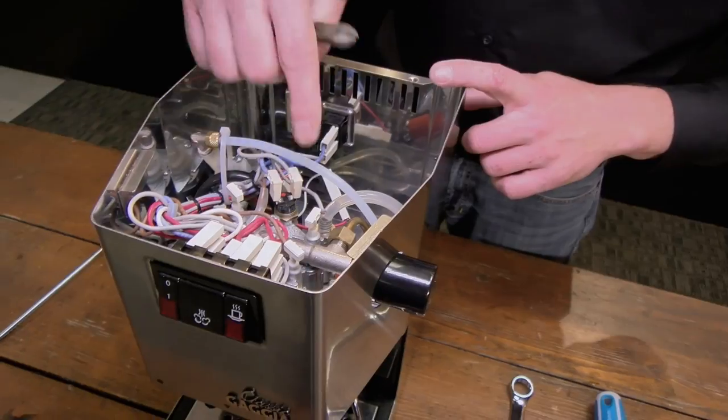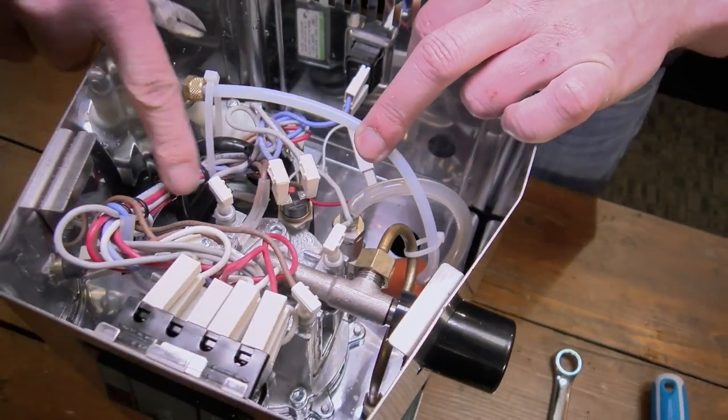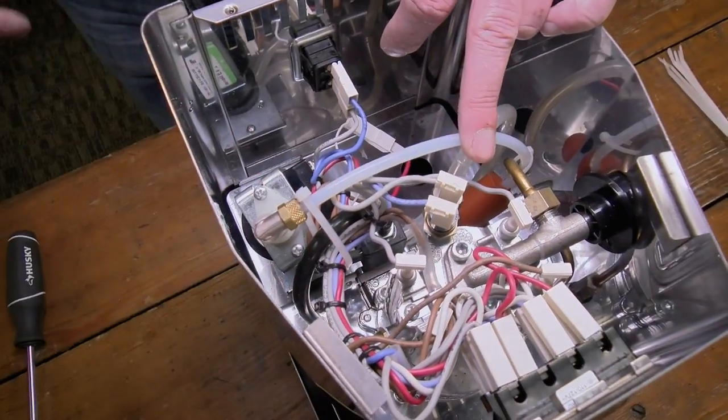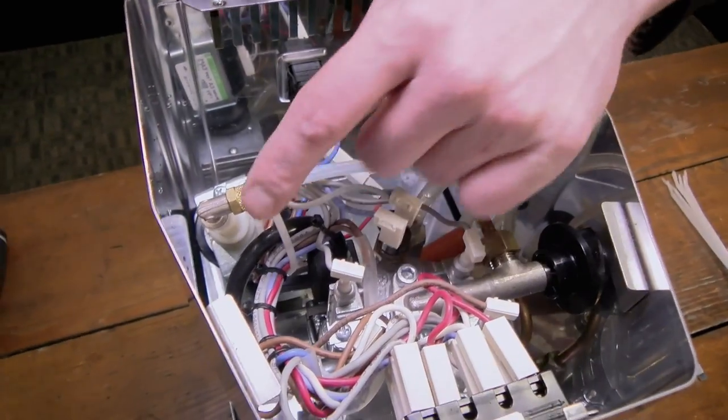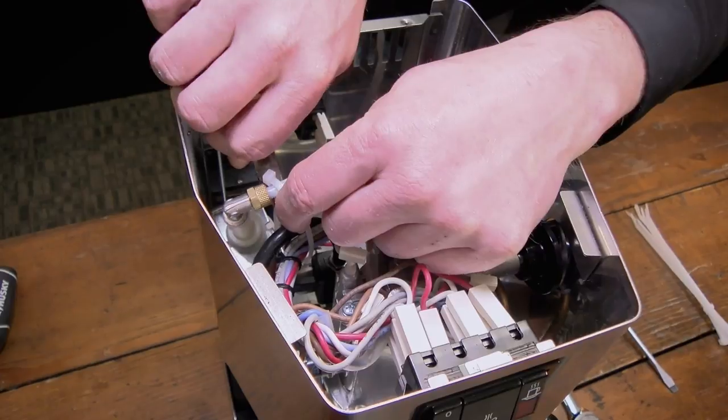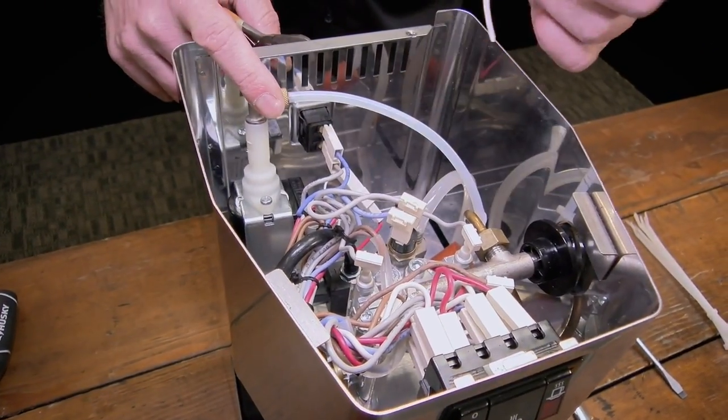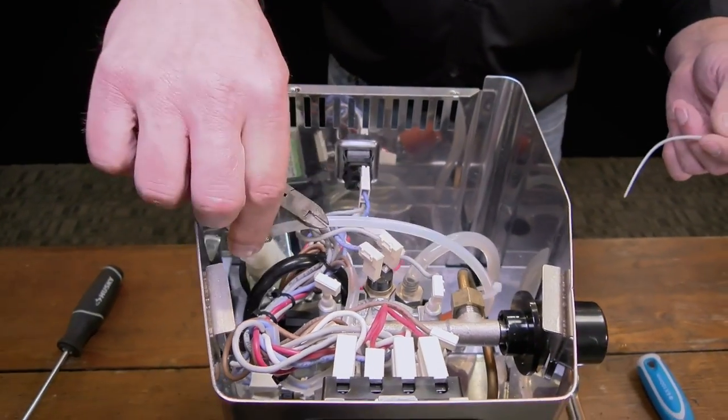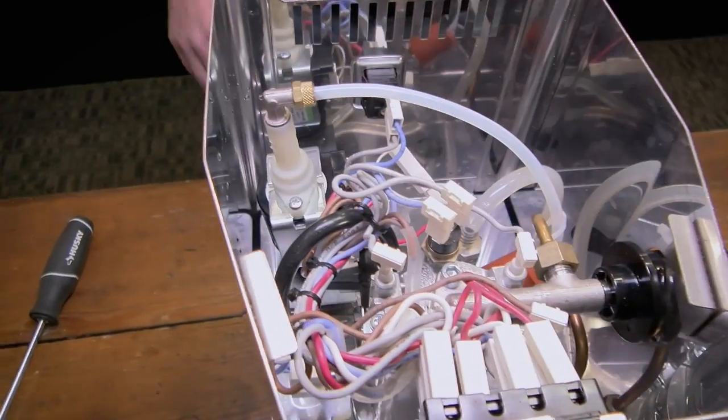Alright, so the stats we're going to replace: this one here is your steam stat, and then there's one down here on the side which is your brew stat. If you have a Gaggia Classic that has a zip tie around the neck, just cut it off. They all don't have a zip tie on it, sometimes they will if they came in for repair at any point. If it's on there just cut it and get it out of your way.